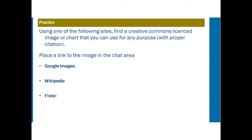Using one of the following sites, find a Creative Commons licensed image or chart that you can use for any purpose with proper citation. Place a link to the image in the chat area and we'll take a look at a few of them. You should look for one from Google Images, one from Wikipedia, and one from Flickr.